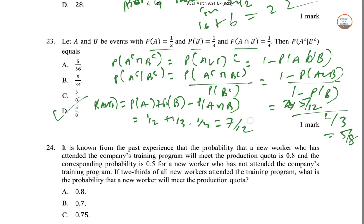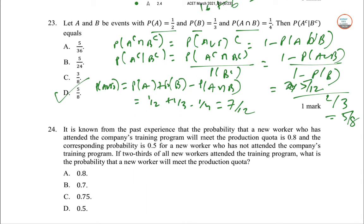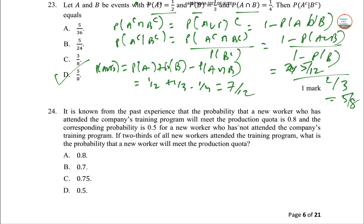It is known that from the past experience that the probability that a new worker who has attended the company's training program will meet the production quota is 0.8 and the corresponding probability is 0.5 for a new worker who has not attended the company's training. Matlab training mila to 0.8 to 0.5. Two thirds of all workers attend the training program, what is the... matlab sirf 67% log ye attend kar rahe hain. New worker will meet the production. To theek hai to P of A agar le lete hain ke event that new worker will meet the production quota so new worker ke liye B hai new worker event that a new worker will attend the training program. A hai new worker meeting the quota.